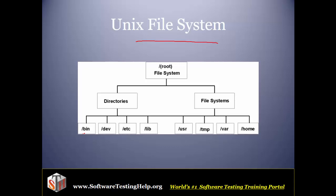The first directory is /bin, which contains all our executable files for most Unix commands. Moving to /dev, it is used to save all our device related files. Next is /etc, used to save all our binary executable files required for system administration. Then /lib contains all our library functions related files.